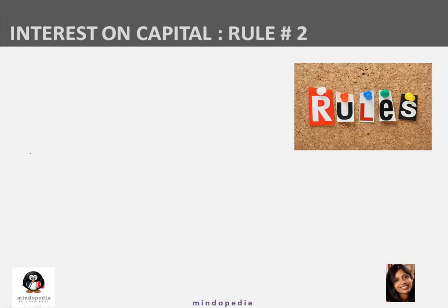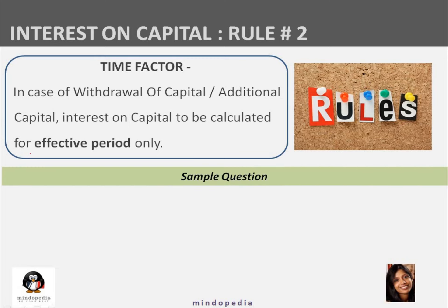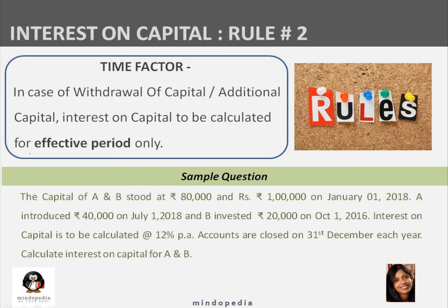Rule number two says the time factor must be considered. Suppose Joy invested 5,00,000 in a business, but after 6 months he withdrew 2,50,000. For the remaining 6 months only 2,50,000 was invested. So we give Joy interest on 5,00,000 for 6 months and interest on 2,50,000 for the remaining 6 months. The time factor should always be considered.